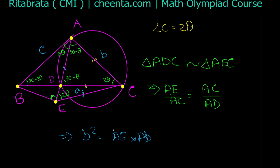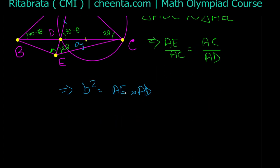To find AE: in triangle ABE, the angle at B is 90 degrees, so AE equals AB times cos(2θ), i.e., AE equals AB · cos(2θ), which is c · cos(2θ).